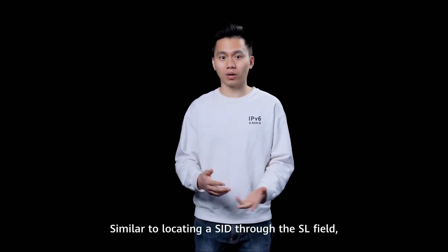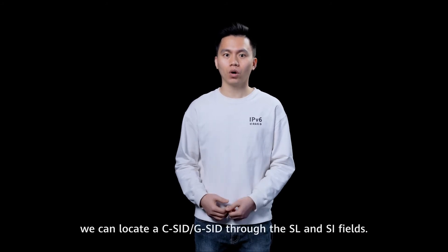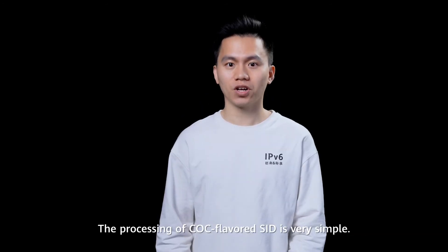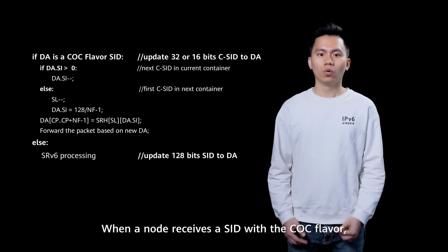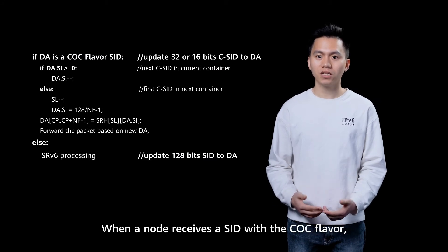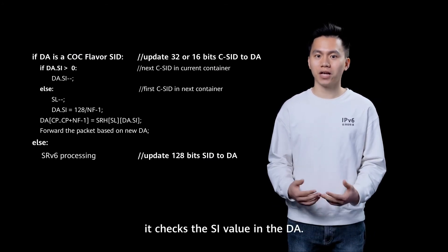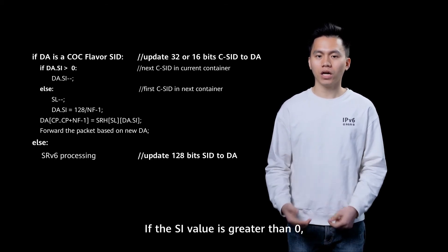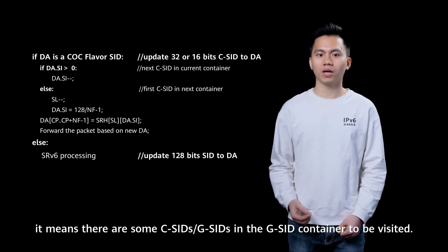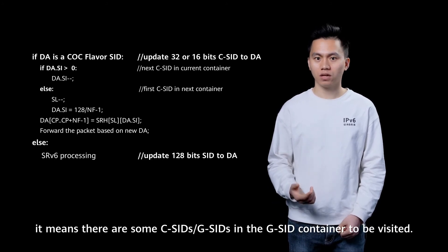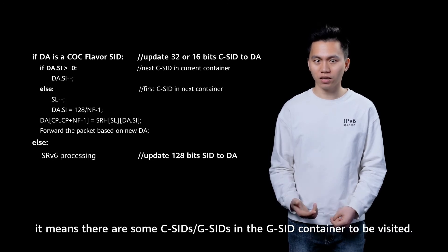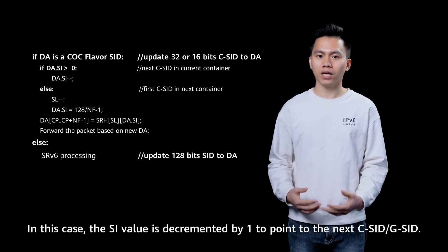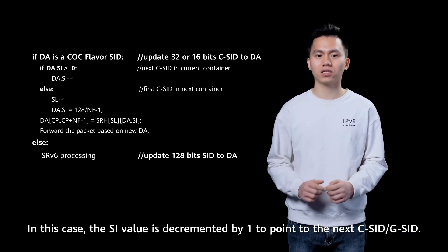Similar to locating a SID through the SL field, we can locate a C-SID through the SL and SI fields. The processing of COC-flavored SIDs is very simple. When a node receives a SID with a COC flavor, it checks the SI value in the destination address. If the SI value is greater than zero, it means there are some C-SIDs in the G-SID container still to be visited. In this case, the SI value is decremented by 1 to point to the next C-SID.